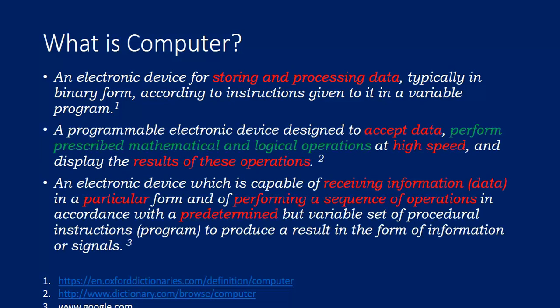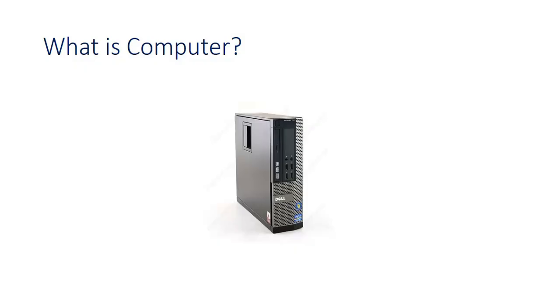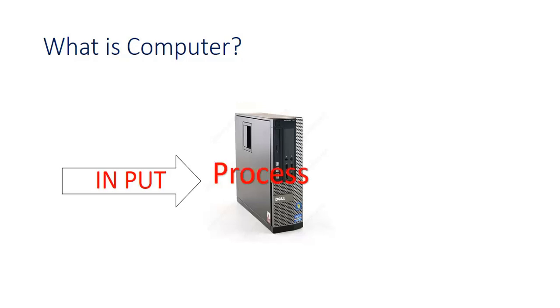An electronic device which is capable of receiving information in a particular form and performing a sequence of operations in accordance with a predetermined but variable set of procedural instructions — called a program — to produce a result in the form of information or a signal. This is another definition given by google.com. So, what comes out of all this? A computer is a device which takes some input, processes that input data, and produces some output result.